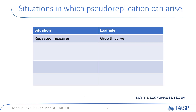The four situations in which pseudoreplication can arise are shown here. The first one is repeated measurements on the same experimental unit. This is a common situation when observations are taken at different times or under different experimental conditions on the same subjects, and this is usually a planned part of the experimental design.